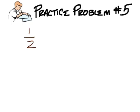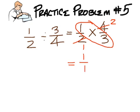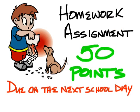Practice problem 5: 1 over 2 divided by 3 over 4. Keep the 1 half, change to multiplication, and flip 3 over 4. You can cancel the 2 and the 4 to 1 and 2. The 1 and 3 can't be reduced. So you have 1 over 1 times 2 over 3, which leaves you with 2 over 3.